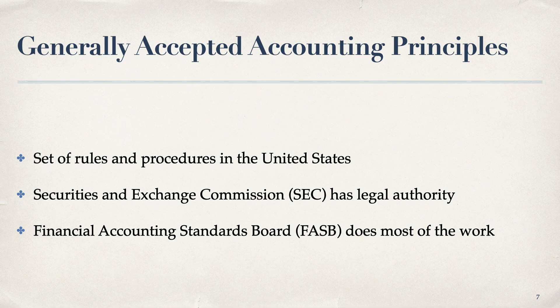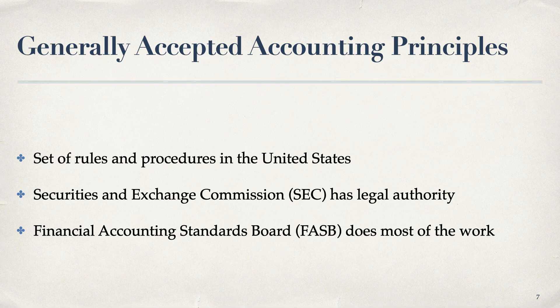Chapter one talks about generally accepted accounting principles — GAAP — which is the complete set of rules and procedures for accounting in the United States. Two organizations are important here. One is the SEC, the Securities and Exchange Commission, which has legal authority to set all accounting standards. However, it allows the FASB — the Financial Accounting Standards Board — to do most of the work. The SEC takes an oversight role because it has statutory authority.